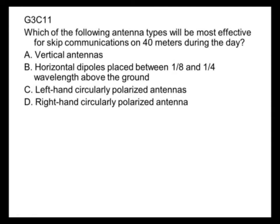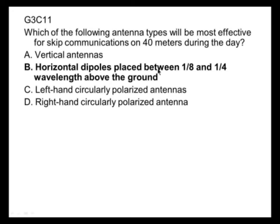Which antenna type will be most effective for skip communications on 40 meters during the day? Horizontal dipoles placed between one-eighth and one-quarter wavelength above the ground. The height above the ground influences the launch angle for the radio wave.